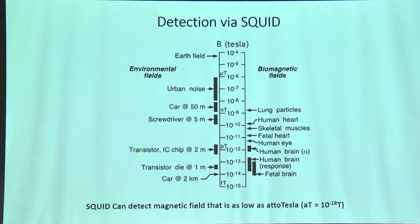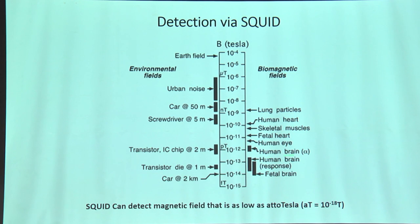This SQUID-based detection can go as low as 10 to the power of minus 18 tesla — the attotesla range — far less than Earth's magnetic field of around 50 microteslas. It is highly sensitive: the human brain's alpha waves are detected at around 10 to the power of minus 13 tesla — around the picotesla to nanotesla level — and David Cohen's device could detect these brain magnetic field lines quite easily.